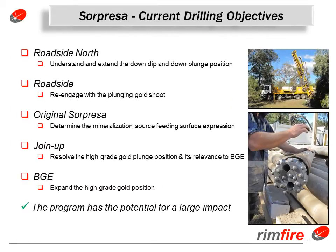In summary, at roadside north we are looking to achieve an extension and understanding of the down dip and down plunge positions, principally guided by the silver mineralisation. At roadside we are looking to re-engage with the plunging gold chute. At original Supraza we are trying to determine how the mineralisation at surface relates to the rest of the Supraza mineralised system — it appears identical in character yet has no direct connection to the major mineralisation, and could be a major leakage anomaly or a repeat structure. At join up we will try to resolve the high grade gold plunge position and its relevance to Boundary Gate East.